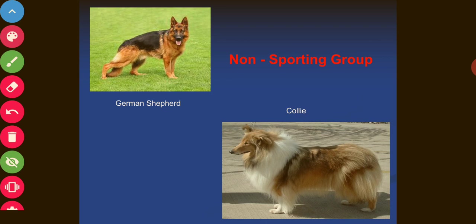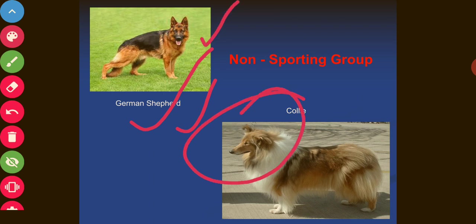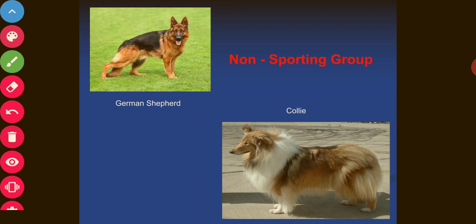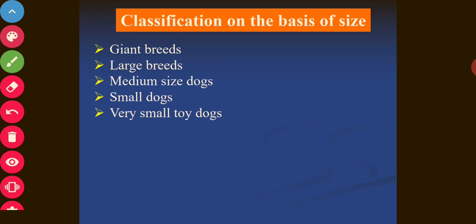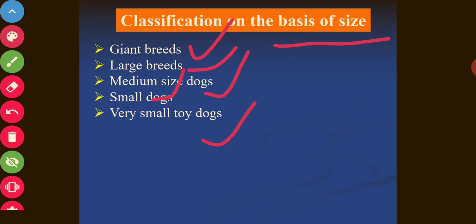The most common herding dog is the German Shepherd, also known as Alsatian, commonly seen in India with police and the army. The Collie breed is also included in this group. Additionally, dog breeds can be classified by size into: giant breeds, large breeds, medium size dogs, small dogs, and very small toy dogs.